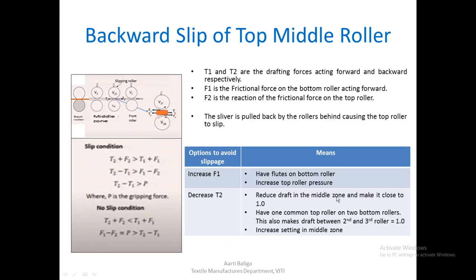Another remedy is to reduce the draft in the middle zone and make it close to one. This isolates the middle zone from the back and front zones so that drafting forces in this region do not resist fiber movement. Alternatively, you can use a common top roller on two bottom rollers — which we will see when studying drafting roller arrangements — making the draft between the second and third rollers almost equal to one. You can also increase the setting in the middle zone.